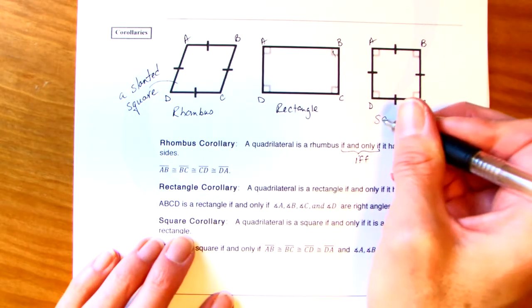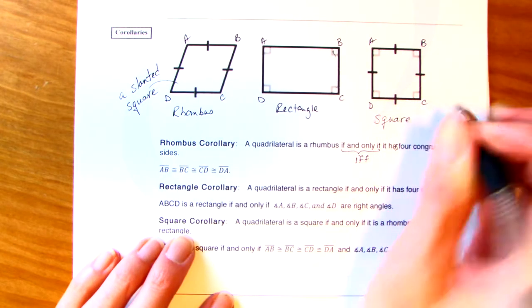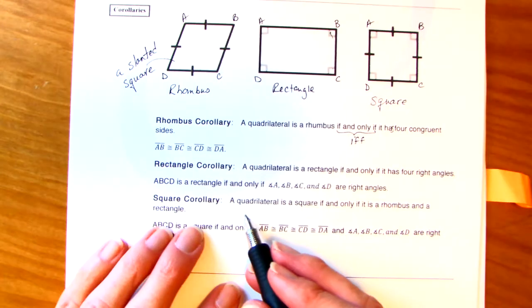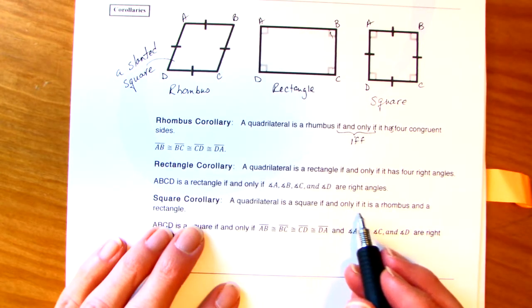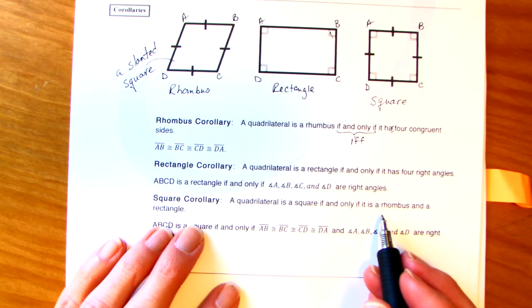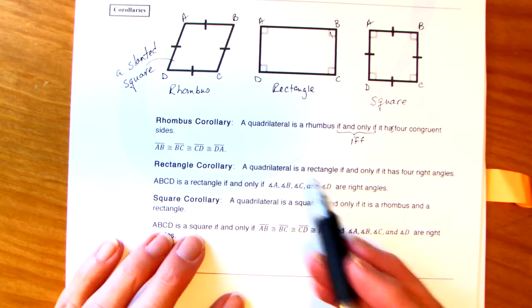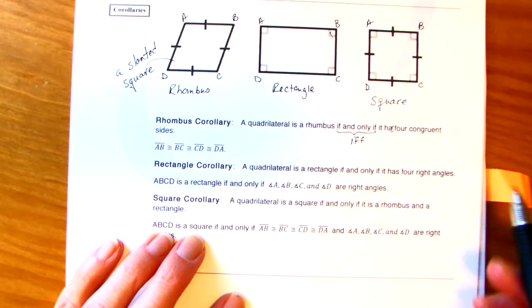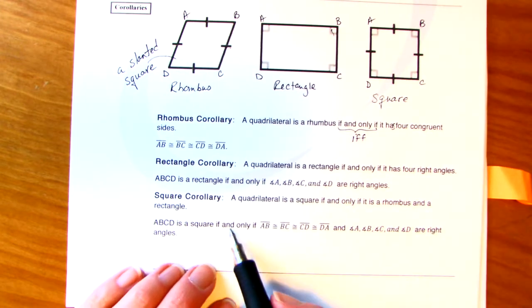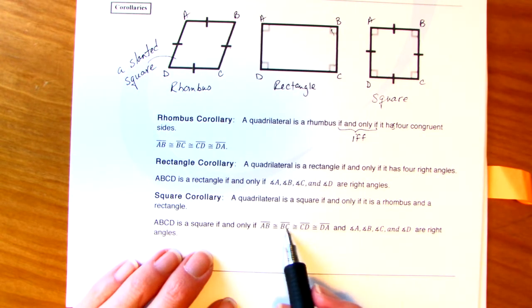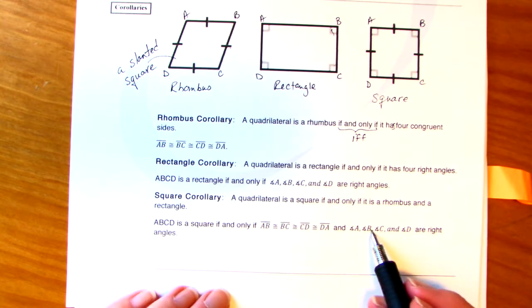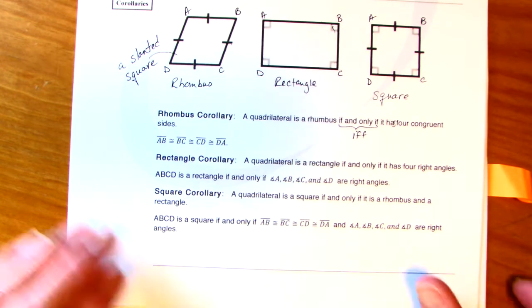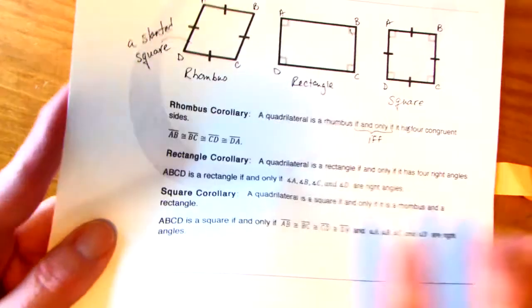And here's our square. If you notice that these have become a little bit more specific. A quadrilateral is a square if and only if it is a rhombus and a rectangle. So four sides are congruent and you have right angles. So your square is the most specific. So A, B, C, D is a square if and only if those sides are congruent and those angles are right angles.